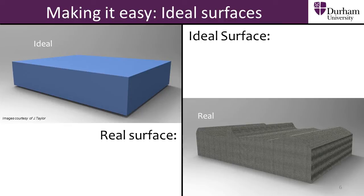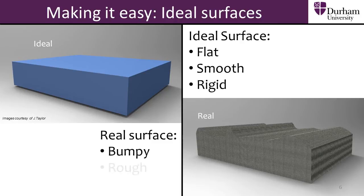However, we often treat surfaces as being ideal to make calculations a lot easier. Ideal surfaces are perfectly flat, smooth and rigid, meaning they cannot bend. In reality, surfaces are bumpy, rough and bendy.